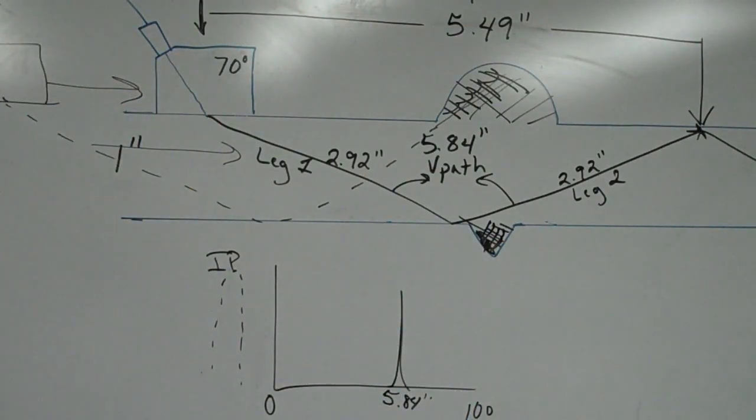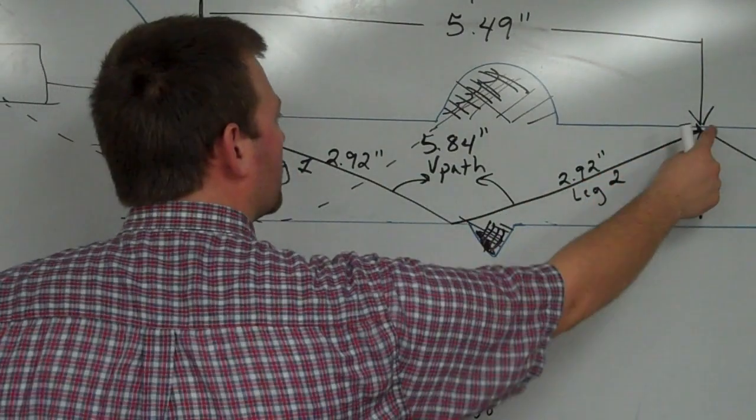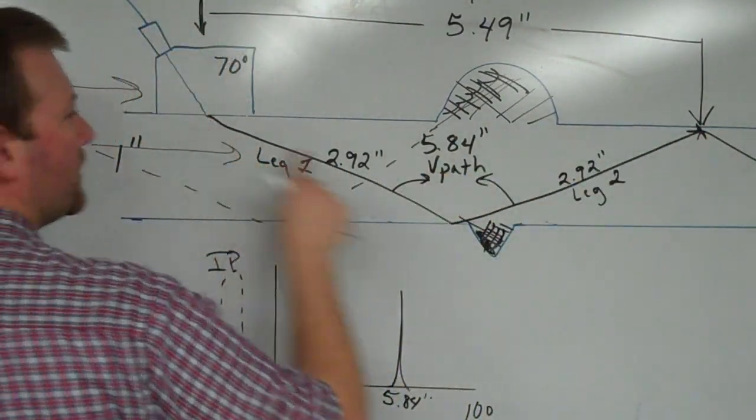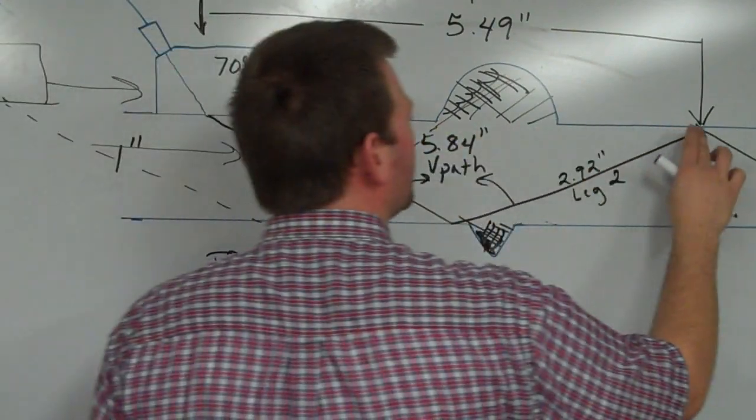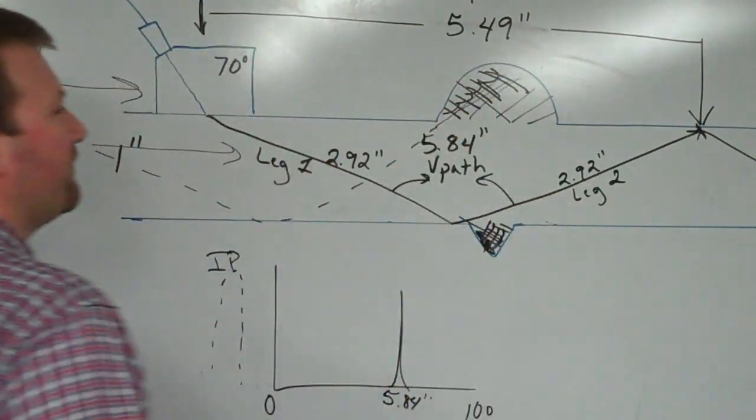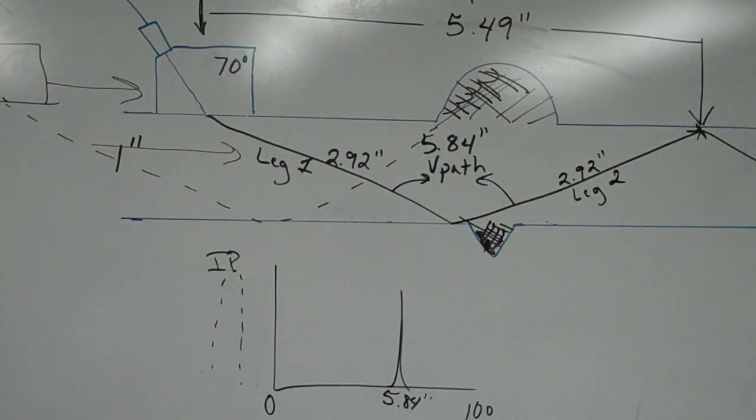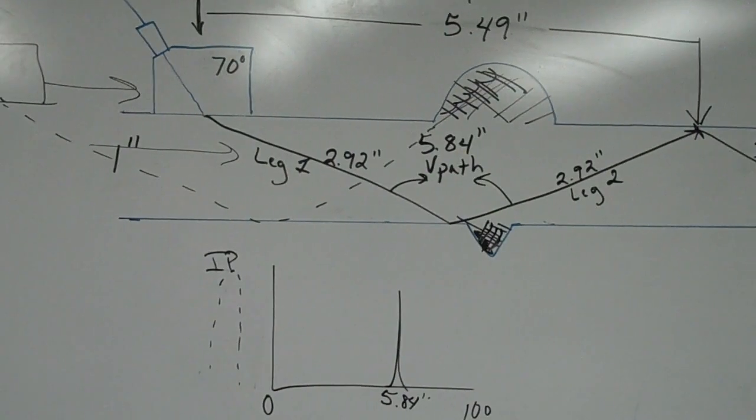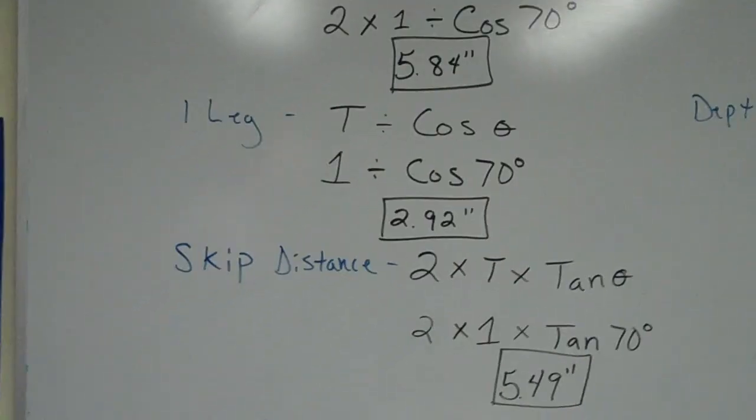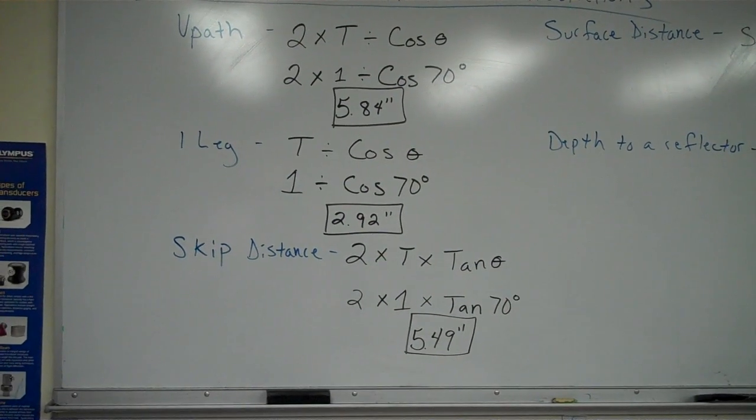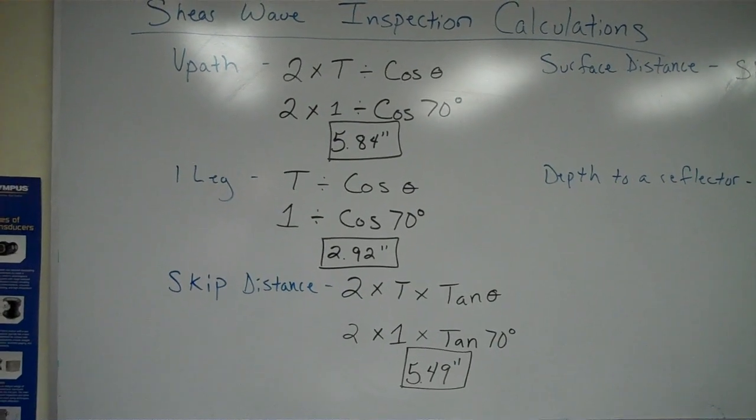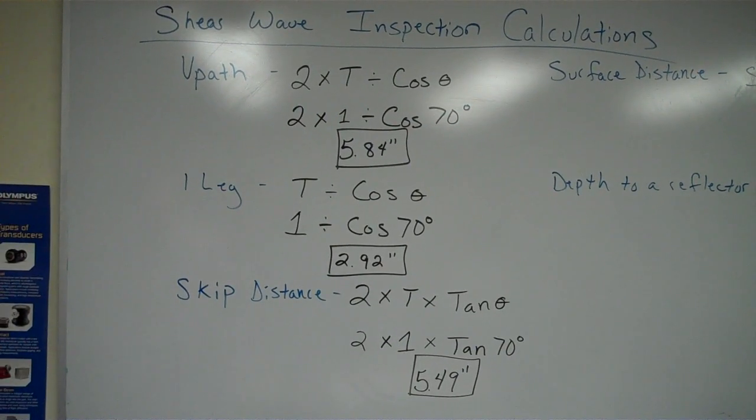But since there's not, we're just looking for this distance so we know where the sound enters, where it bounces at the bottom, and then where it's going to bounce again at the top and head back down. That way we can control our distance away from the weld. If we put the end of our skip distance right here and we move our transducer back like this, where our skip distance is right there.